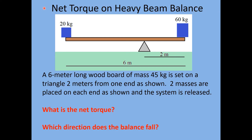In part two of this lecture, we found the net torque on a light beam balance where we could ignore the beam's mass. In this problem, we include the fact that the beam is heavy — a 6-meter-long wood board with a mass of 45 kilograms — along with a 20-kilogram mass and a 60-kilogram mass. We can't ignore the board since it's considerably heavier than one of the masses. The system is held and then released; we need to find the net torque and determine whether the balance rotates clockwise or counterclockwise.